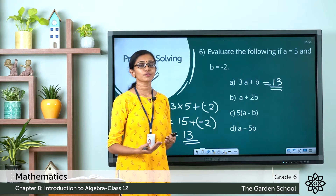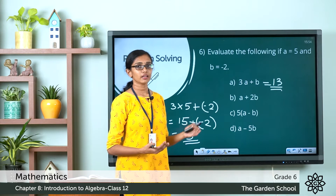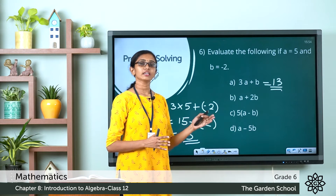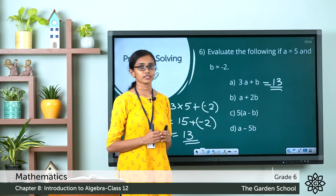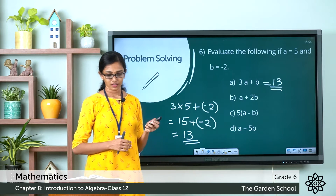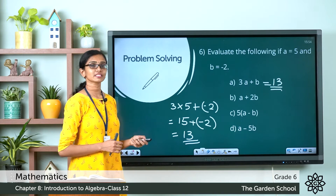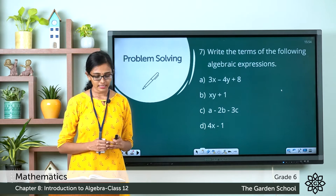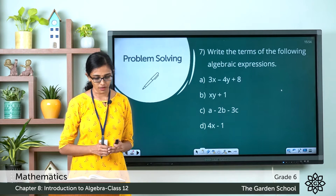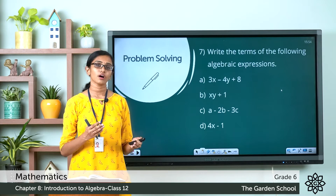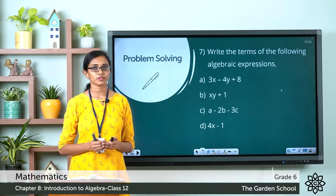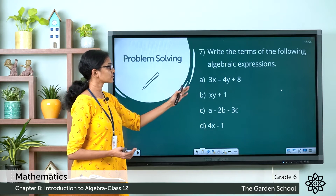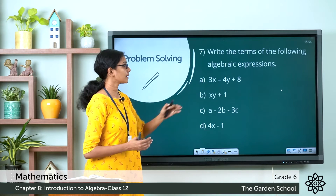Similarly, substitute the values of a and b in the remaining expressions and evaluate each. Now that was question 6. Let's see question 7: write the terms of the following algebraic expressions. The first expression is 3x minus 4y plus 8.